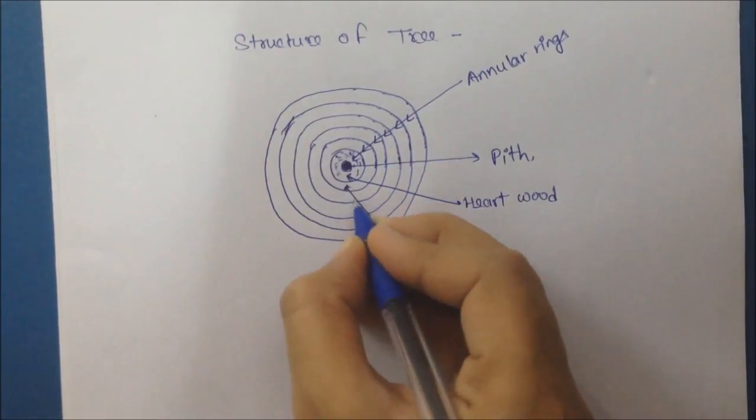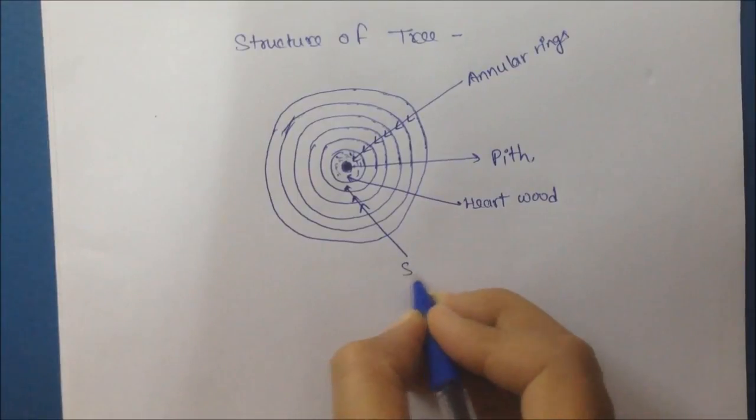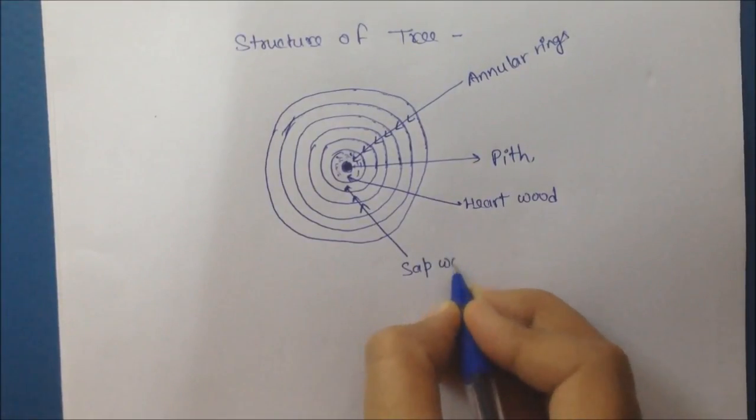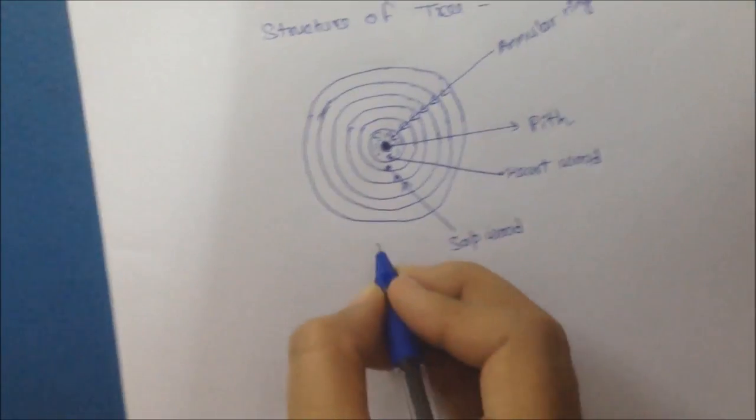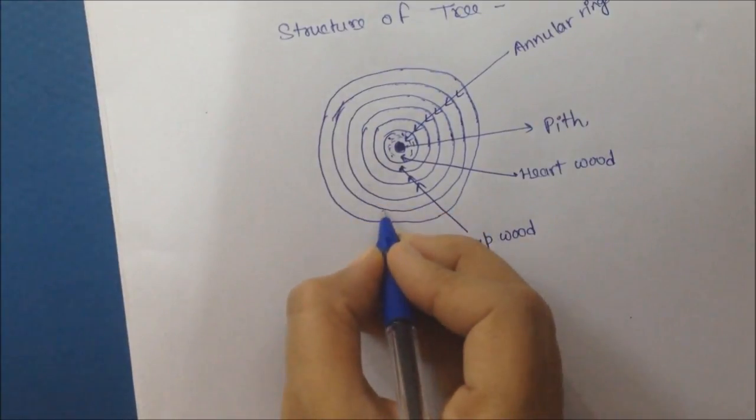Annular rings after hardwood are called sapewood. It is light color and it is responsible for growth. But sapewood doesn't provide strength.